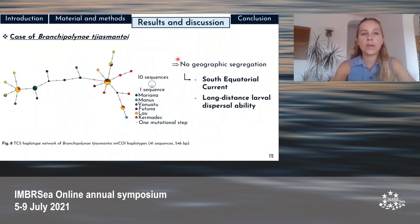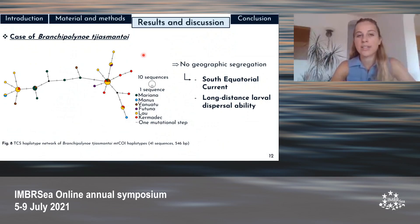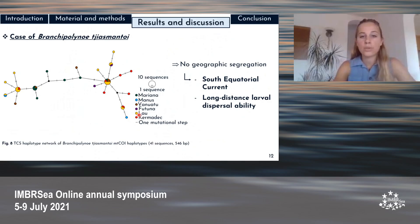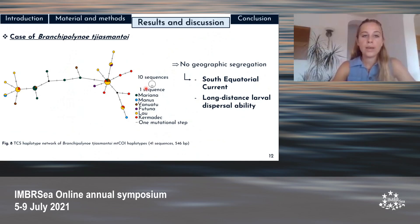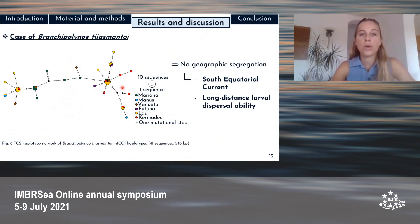One of the Manus species was Branchipolynoe chasmonteuil. Forty-one sequences were inferred from this study and additional data. This polynoid species was distributed across several distant localities including the Mariana Trench, Manus and Lau Basins, and the Futuna volcanic arc. The absence of geographic segregation may be linked to the influence of the south equatorial currents, along with the fact that polynoid species have large lecithotrophic eggs allowing for long-distance dispersal. The haplotype network shapes reveal the possibility of bottleneck events for this species as well, though no further analysis was performed due to the low sample size per locality.